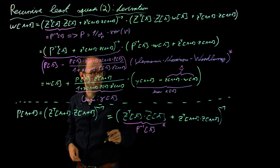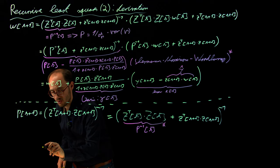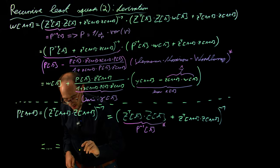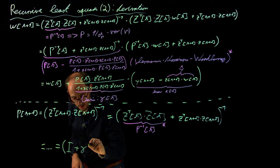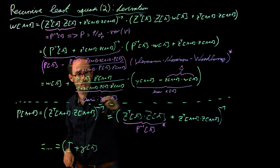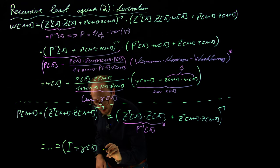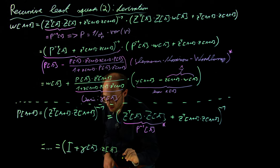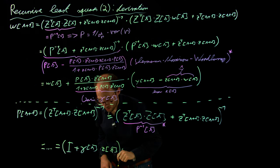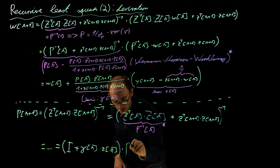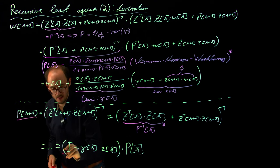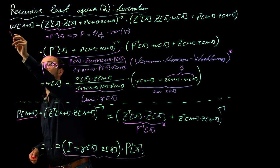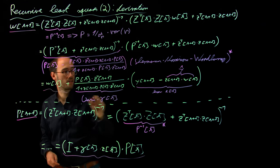Applying the Sherman-Morrison-Woodbury formula and skipping one or two intermediate steps, we obtain: P(k+1) equals the identity matrix plus gamma(k) — our gain vector — times z(k), the previous regressor vector, all multiplied by P(k). So P(k+1) is expressed recursively in terms of P(k) and the gain gamma(k). These two equations — for w_{k+1} and P(k+1) — are the two key results of this derivation.